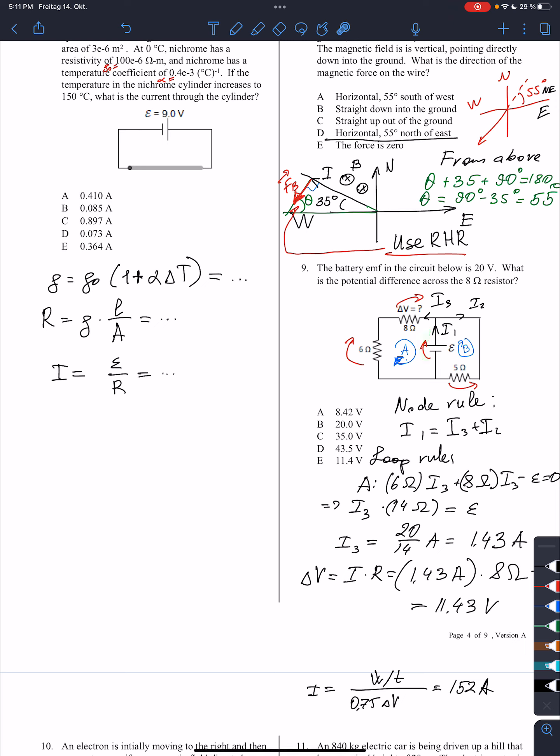So then I will identify two loops, the loop A and the loop B over here. Okay, the node rule tells me that the incoming currents equal to the outgoing currents. So there is only one incoming current and there are two outgoing currents. One incoming, two outgoing.